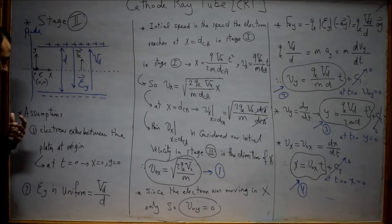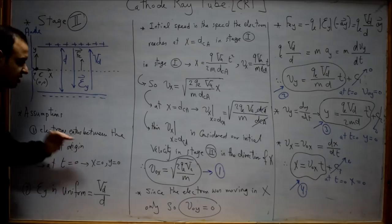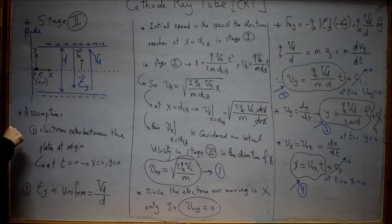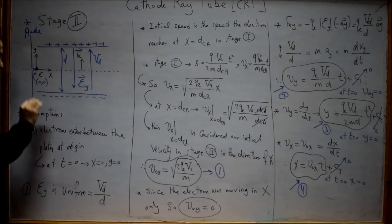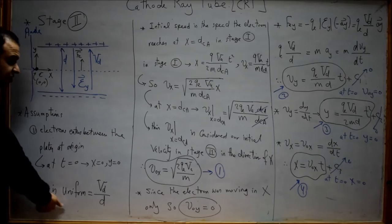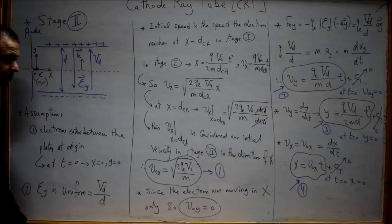I have two assumptions. First, the electron always starts at the origin — the point at which the electron enters the plates. I will assume that this point is the origin, where Y and X are defined. So at T equal to zero, the displacement in X is zero and the displacement in Y is zero. I will also assume that the electric field is uniform and constant — it does not depend on distance or time.